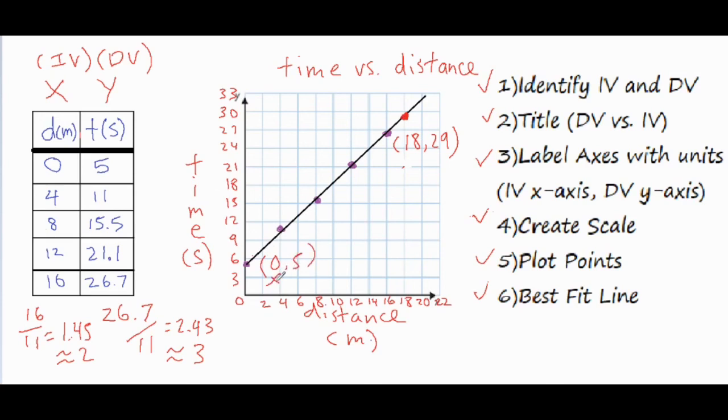And then this would be my first X value, this would be my first Y value, this is my second X value, and here's my second Y value. So if I wanted to find a slope, I could just go ahead and do y2 minus y1 over x2 minus x1. And then 29 minus 5 is 24 seconds over 18 meters, and that equals 1.33 seconds over meters.